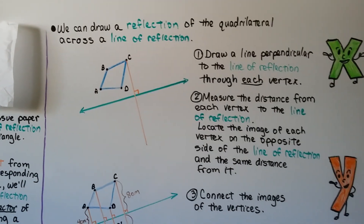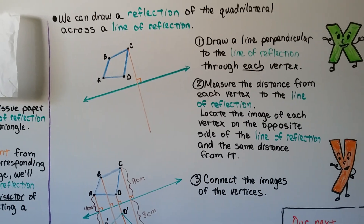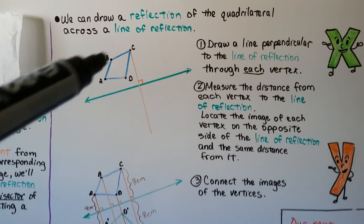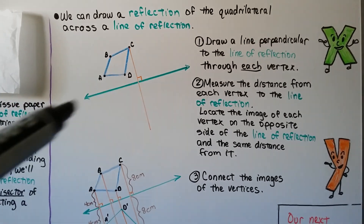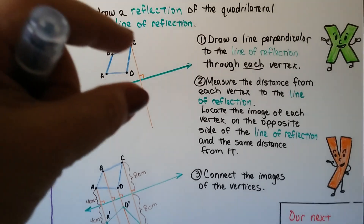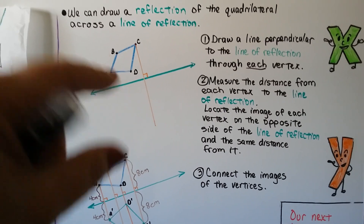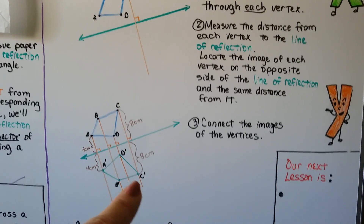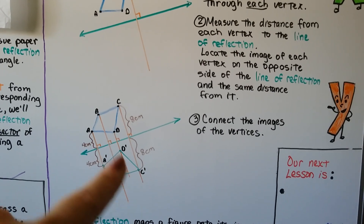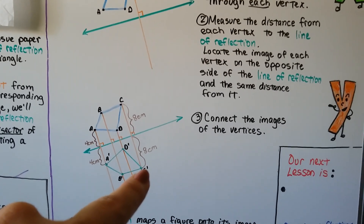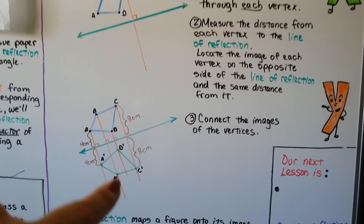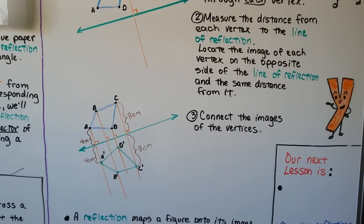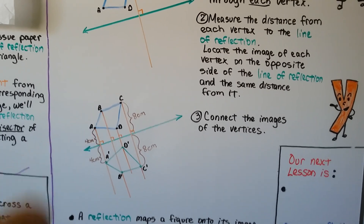We can draw a reflection of a blue quadrilateral across the line of reflection. First, draw a line perpendicular to the line of reflection through each vertex A, B, C, D. Then measure each distance from each vertex to the line of reflection. Locate the image of each vertex on the opposite side of the line, the same distance from it — for example, if C is 8 centimeters from the line, then C prime is 8 centimeters on the other side, and if A is 4 centimeters, then A prime is 4 centimeters. Connect the images of the vertices and the green figure is the reflection of the blue one.